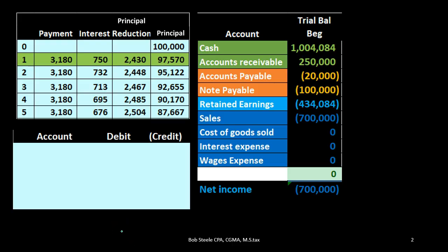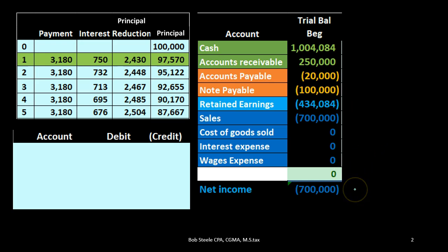Here we have our amortization table — just a piece of it at the top. We're going to record our journal entry in the general journal and post it to our worksheet, our trial balance. In the balance we have assets, liabilities, equity, then revenue and expenses. Debits are represented with non-bracketed or positive numbers, credits with brackets or negative, so debits minus credits equal zero. Net income is $700,000, which is revenue or sales minus expenses — there are none at this time.